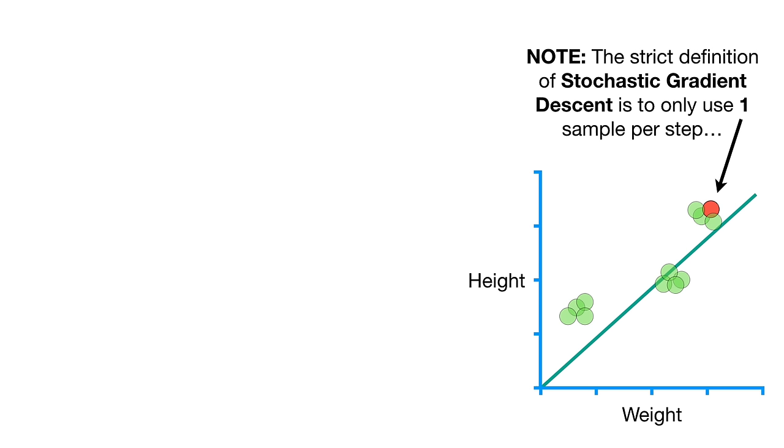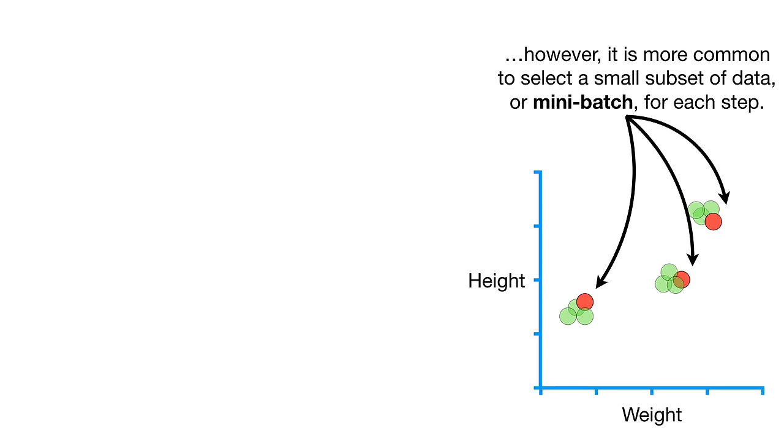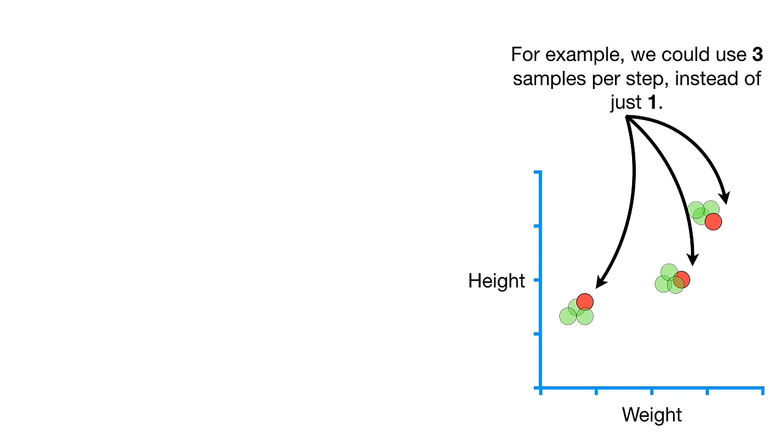And the least squares estimates, a.k.a. the gold standard, gives a line where the intercept equals 0.87 and the slope equals 0.68. BAM! Note, the strict definition of stochastic gradient descent is to only use one sample per step. However, it is much more common to select a small subset of data, or mini-batch, for each step. For example, we could use three samples per step instead of just one.